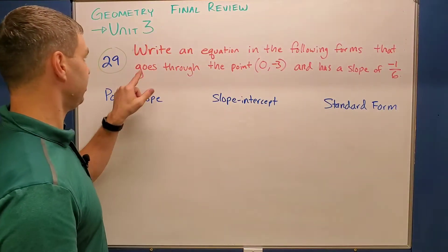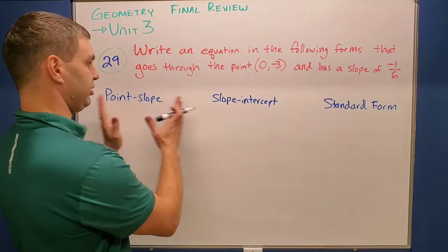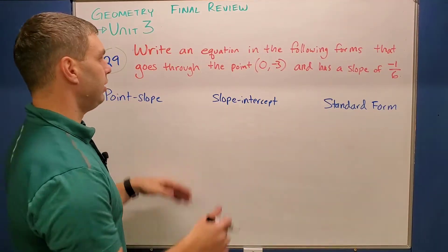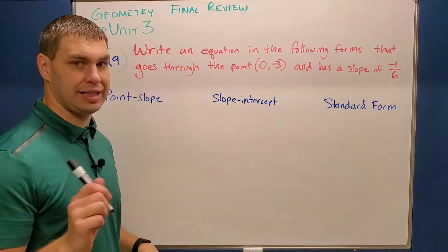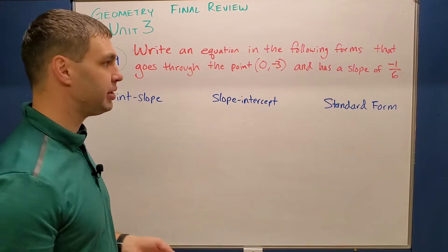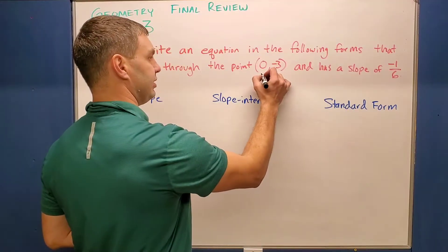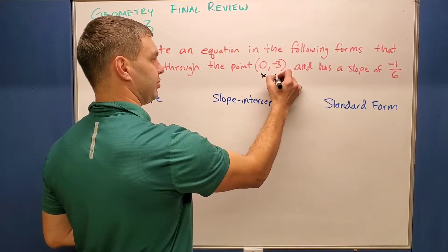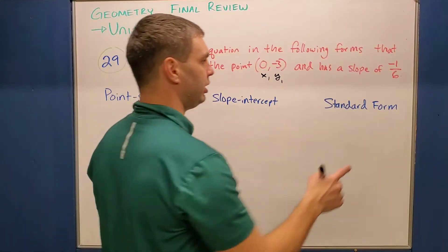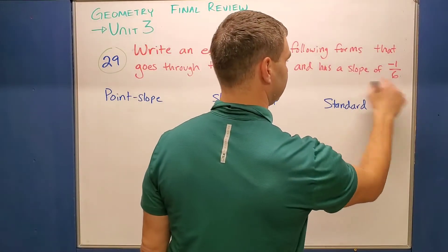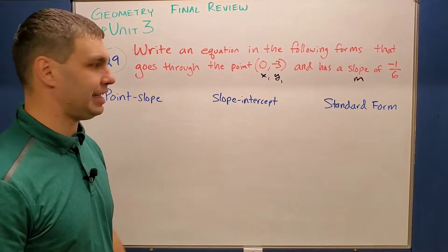This next question asks us to write an equation of a line in three forms — point-slope, slope-intercept, and standard form — that goes through the point (0, -3) and has a slope of negative 1/6. We're going to start in point-slope form because they give us a point and a slope. The point is (x1, y1) = (0, -3) and the slope m equals negative 1/6.